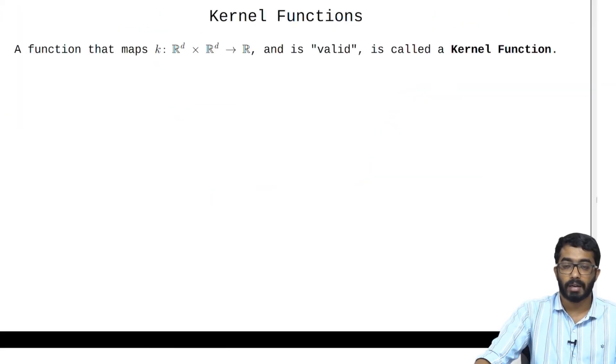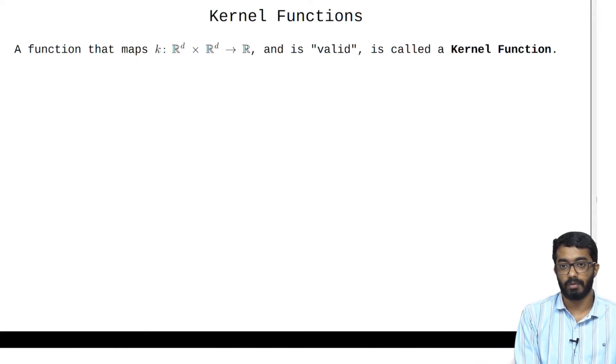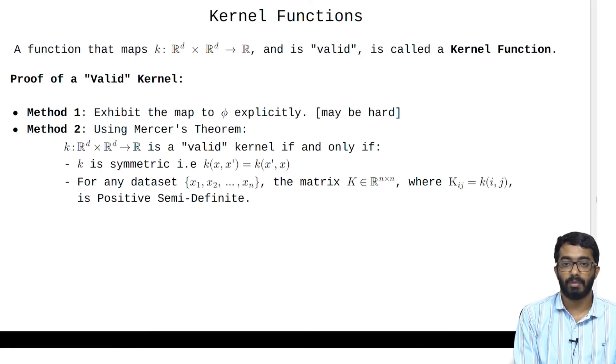Now let us go back to our companion notebook. We now focus on kernel functions themselves. A function that maps R^d cross R^d to R and is valid is called a kernel function. Now what do you mean by a valid kernel?